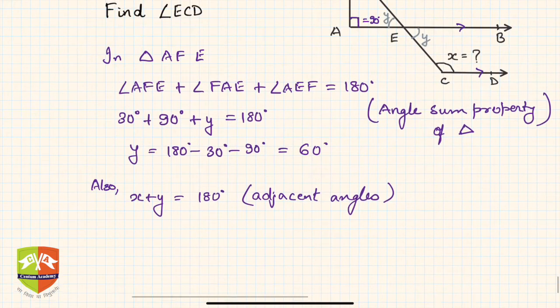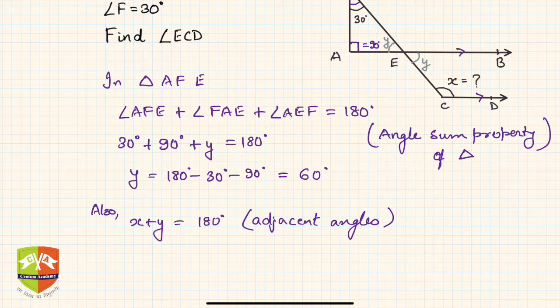The adjacent angles are supplementary, so you will get x from here, which is 180 degrees minus y, which is nothing but 180 degrees minus 60 degrees, which equals 120 degrees.